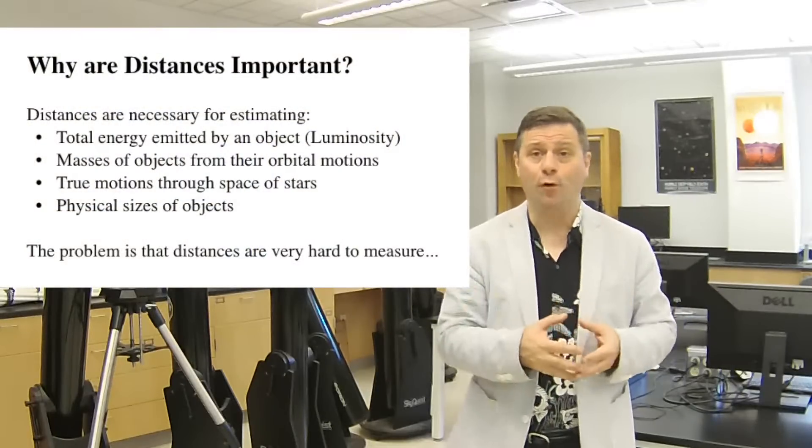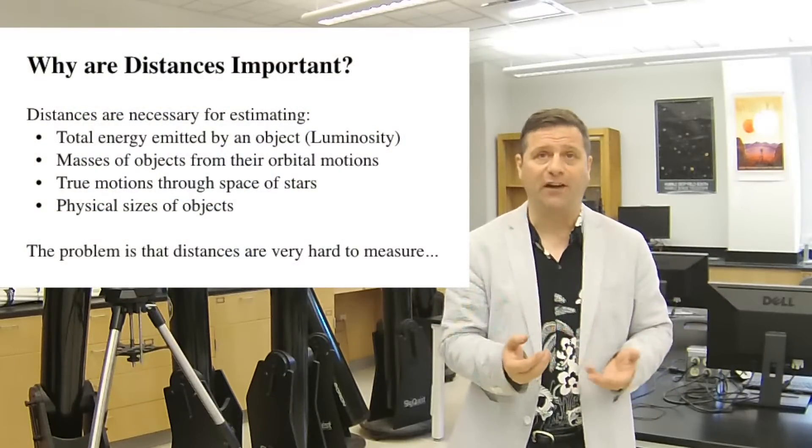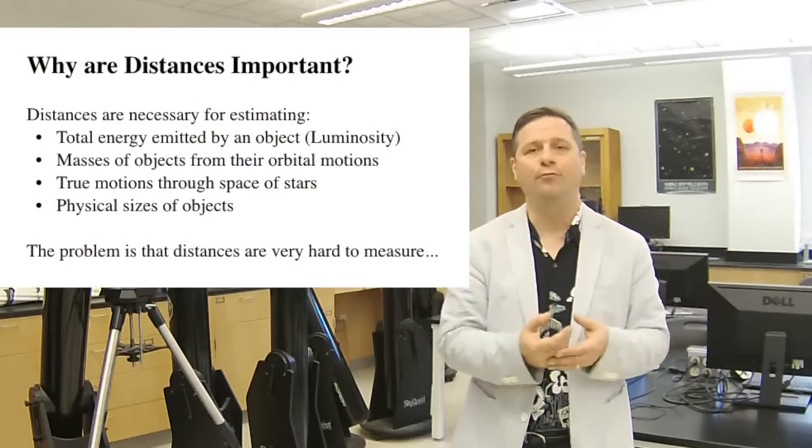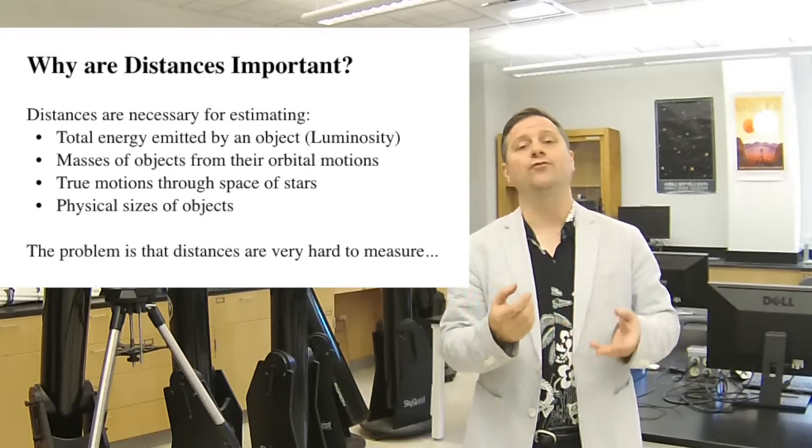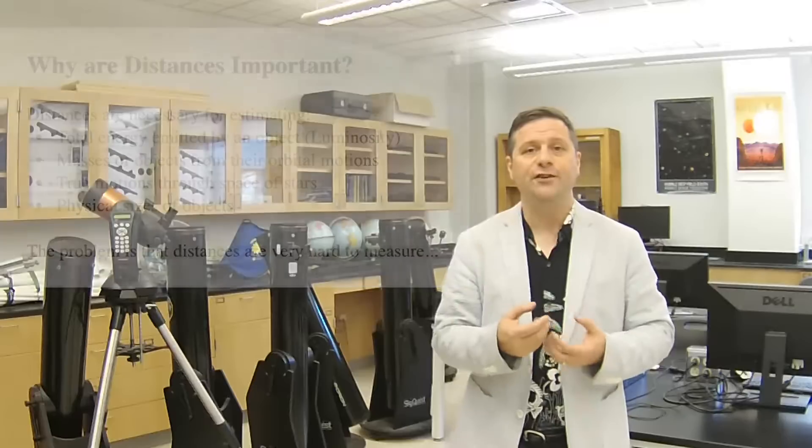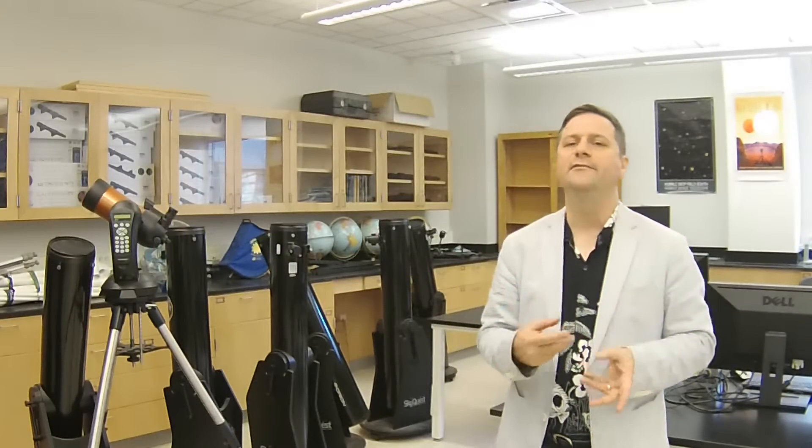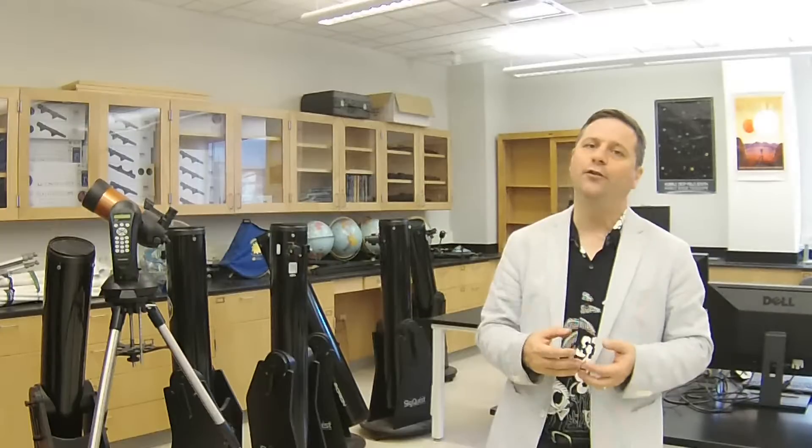Distances in astronomy are both extremely important and really hard to get. Why are they important? Because if we can get the distances to stars, then we can learn more about them such as their physical size or their luminosity. We can determine their masses indirectly and their true motion through space. If we don't actually get distances, we can't get many other physical parameters about stars.